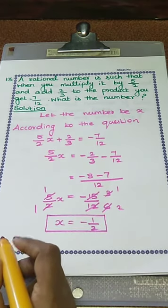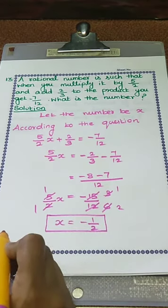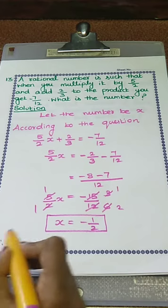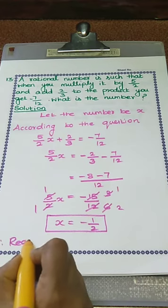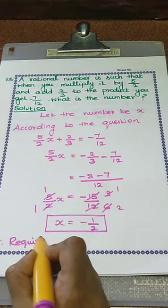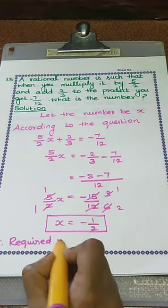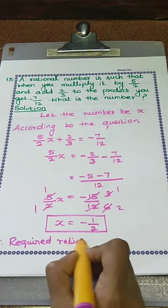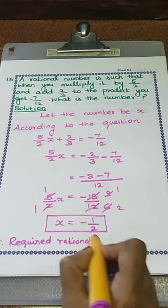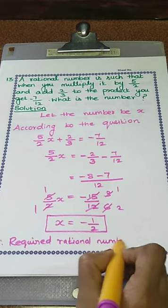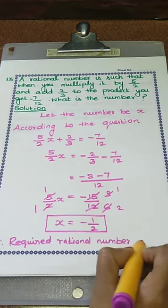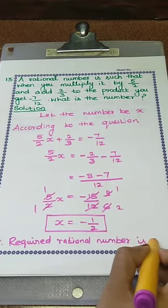Therefore, the rational number is minus 1 by 2. Therefore, the required rational number is minus 1 by 2.